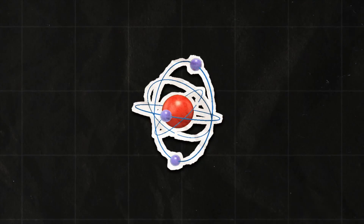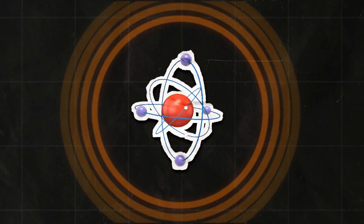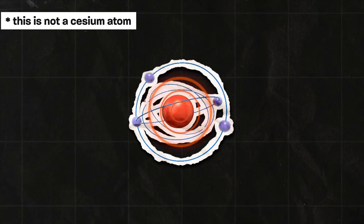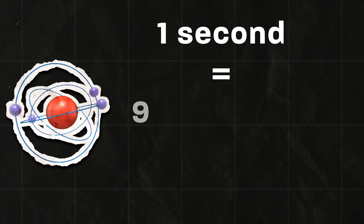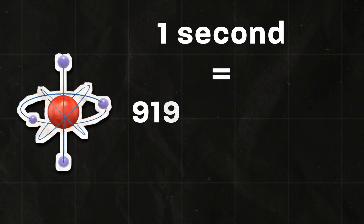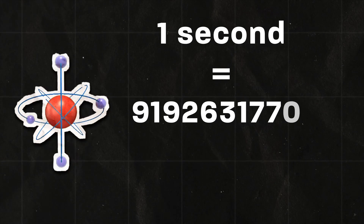It comes from atomic clocks. We look at an atom of cesium, which emits radiation at a very specific frequency. One second is exactly 9,192,631,770 oscillations. So we finally have our answer — a second that is the same for everyone. Or is it?